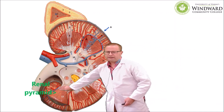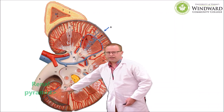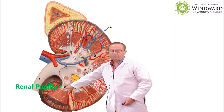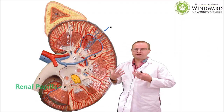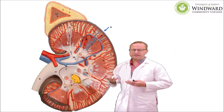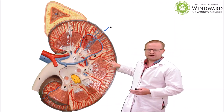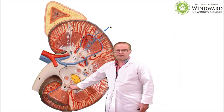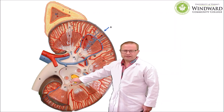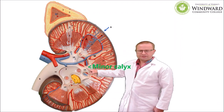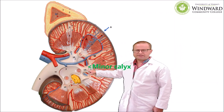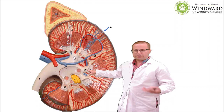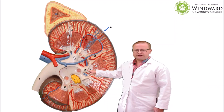The renal pyramid is a conical structure that has a little nipple-like tip called the renal papilla. Blood is being filtered, we're generating filtrate, and that filtrate moves from the cortex into the medulla. Whatever is left behind is drained from a renal papilla into something called a minor calyx — a funnel-like structure that collects the urine and drains it into the renal pelvis.